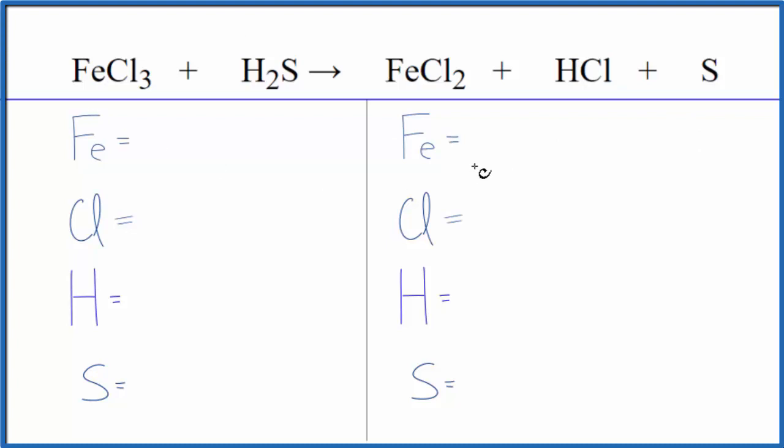So to balance the equation, let's count the atoms up. We'll need to be careful, especially on the product side here. We have one iron, three chlorines, two hydrogen atoms, and just the one sulfur atom.